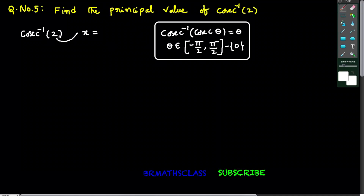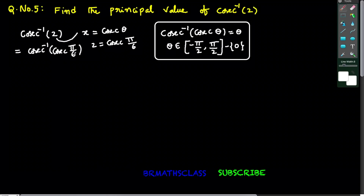I want to write this 2 in cosecant theta form. From the trigonometry table, cosecant 30 degrees is 2. So 2 can be written as cosecant 30 degrees. 30 degrees is nothing but pi by 6, so we write 2 as cosecant pi by 6.